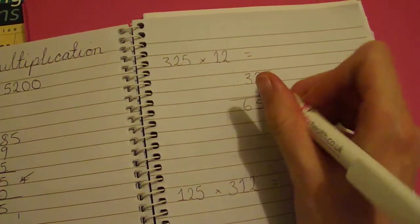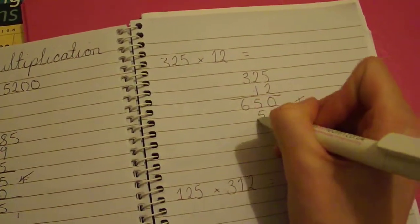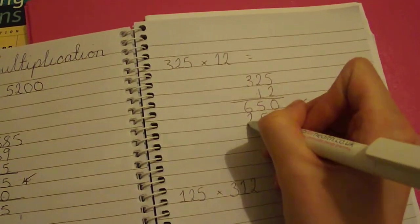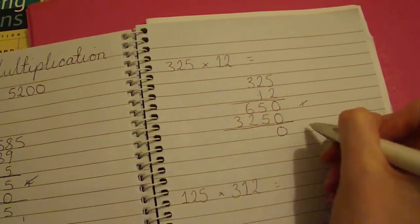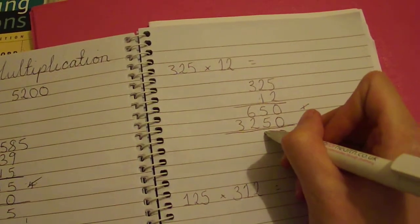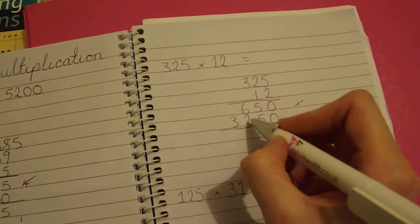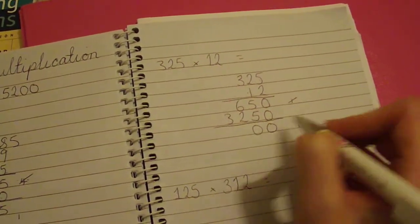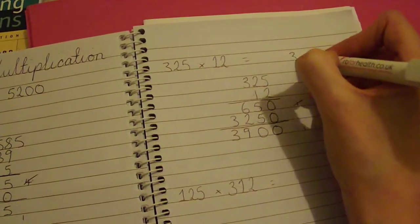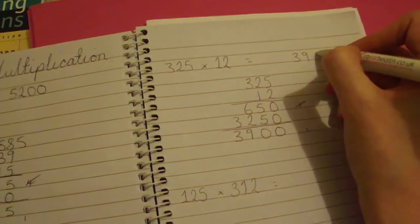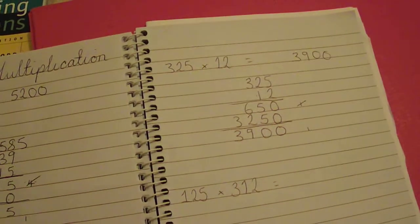Add in your 0 here. 1 times 5 is 5. 1 times 2 is 2. 1 times 3 is 3. Add in these numbers. 0 and 0 is 0. 5 and 5 is 10. Carry your 1 and put in your 0. 6 and 2 is 8. Add this 1 is 9. And then 3 on the end. So 3,900 is your answer.